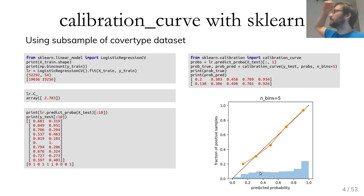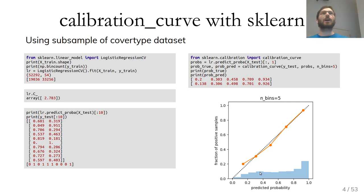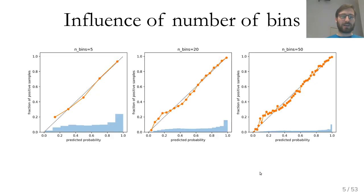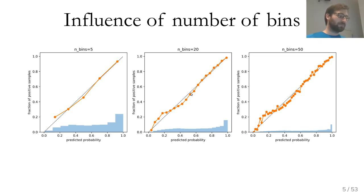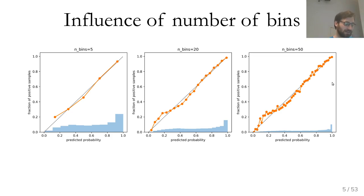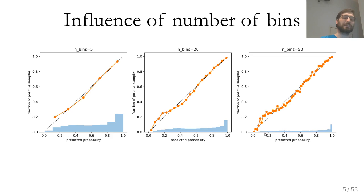One thing you need to take into account when plotting or computing this metric is the number of bins. Depending on how many data points you have, you can use more or fewer bins. With very few bins, say five, you get a very coarse measurement. With many bins, say 50, you get a very noisy estimate because there will be very few data points in most bins. You can see most data points are concentrated in one area, so bins with few points give poor estimates.